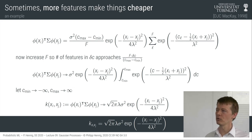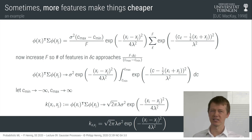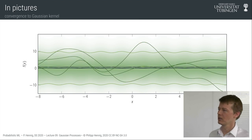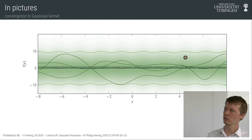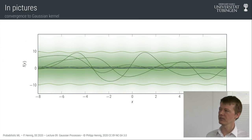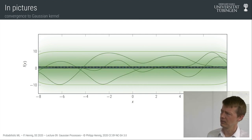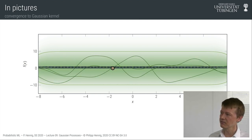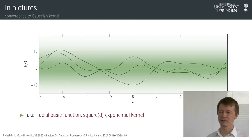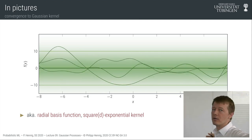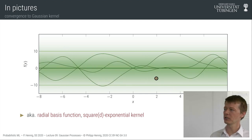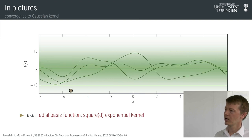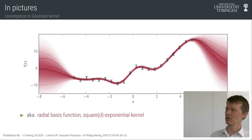Pictorially: we start with 8 Gaussian features, increase to 32, then take the limit to infinitely many densely packed features across the real line. Even with infinitely many features, we can still draw the prior mean, error bars, and samples, and compute posterior distributions — as shown in the plots. This is an infinitely wide neural network with Gaussian Bayesian inference on its weights.